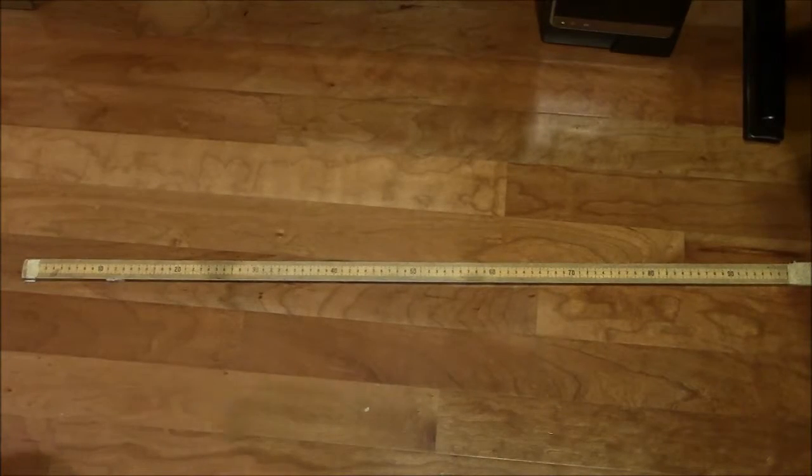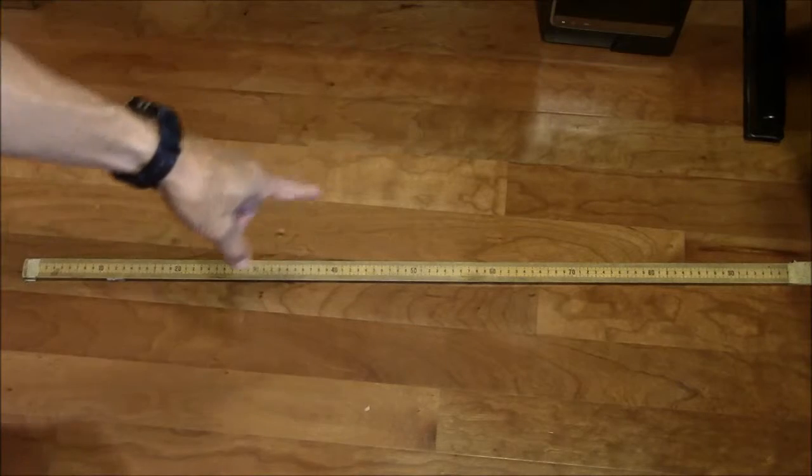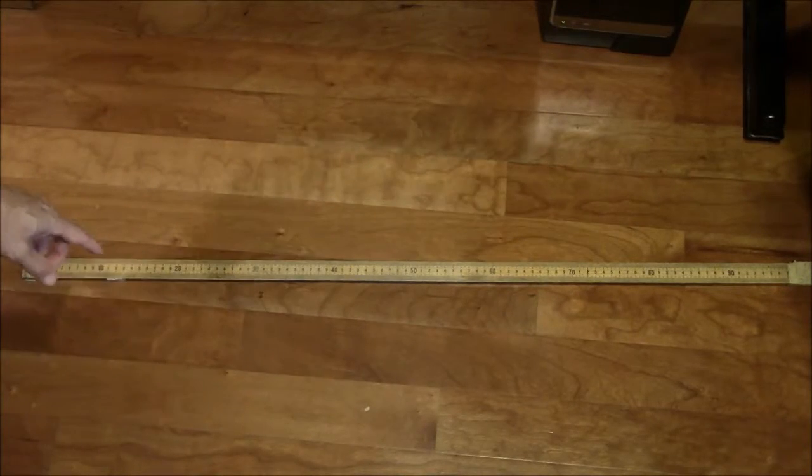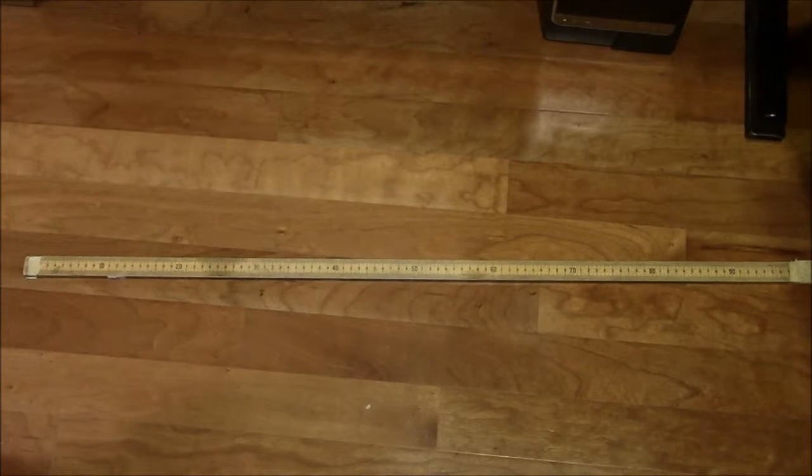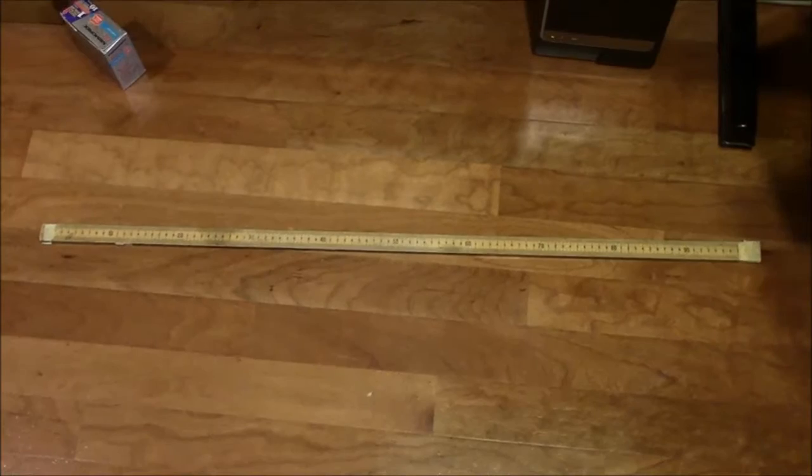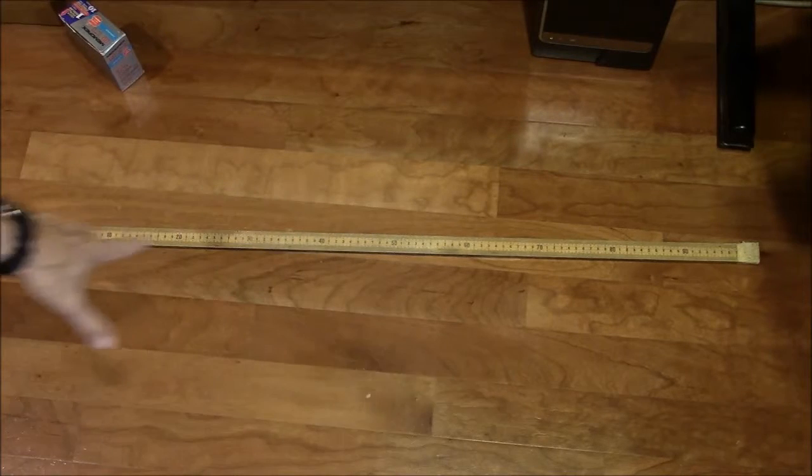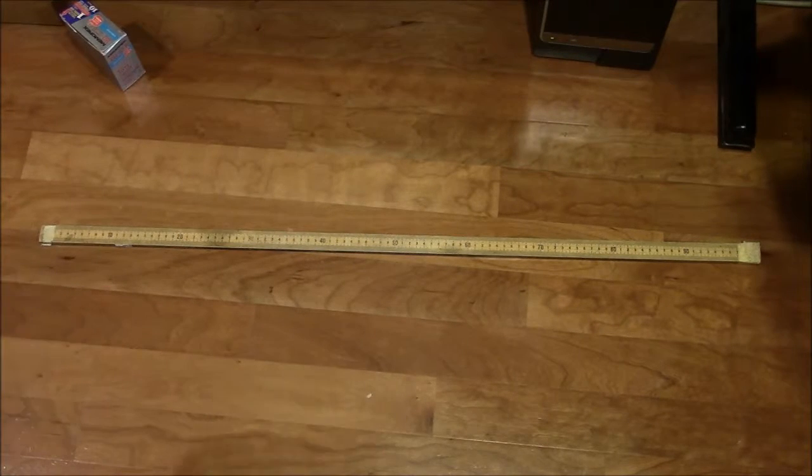One hundred centimeters is a meter. So this is a meter stick here. And that's the length of the side of the big box, the kiloliter box. So the kiloliter is a cubic meter.